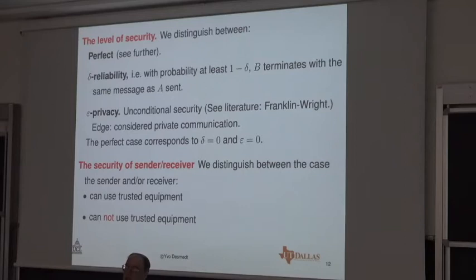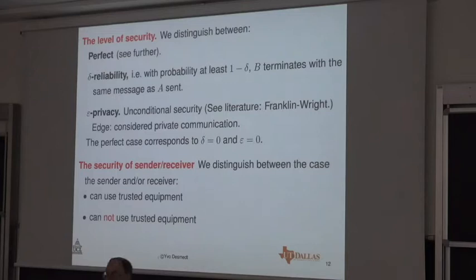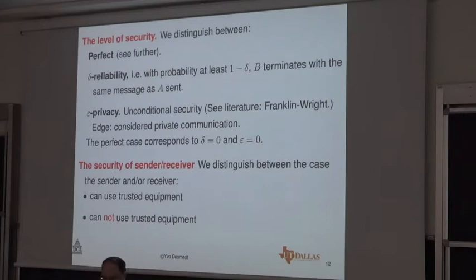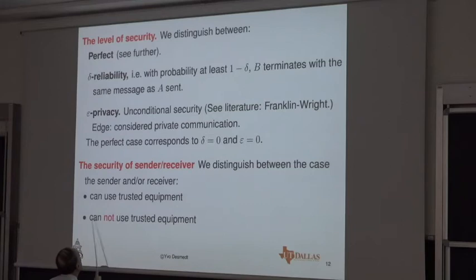Regarding the security of the sender and receiver: usually in all the literature until a few years ago, people considered that the sender and receiver use trusted equipment. The reason is that cryptographers do not understand computer security. A very famous European researcher in computer security said, after the Snowden leak, anybody on the street understood that computers are insecure — except cryptographers. He said no, I have too many friends, so I cannot quote him. You clearly see this when you read papers in cryptography — you always trust the equipment used by sender and receiver.